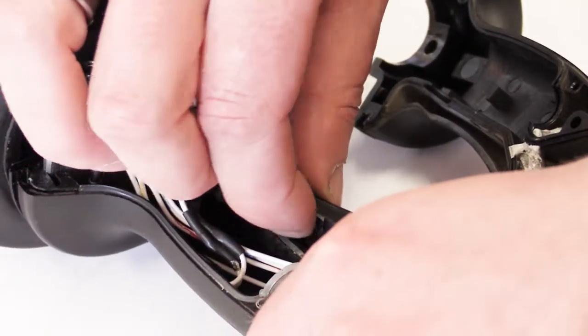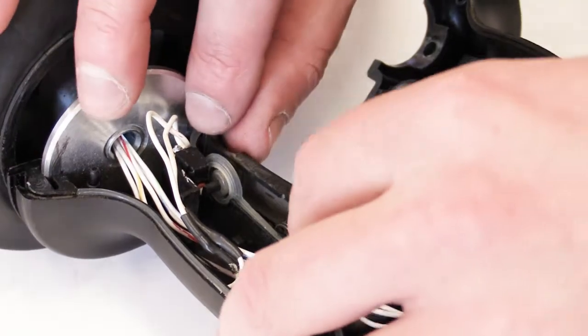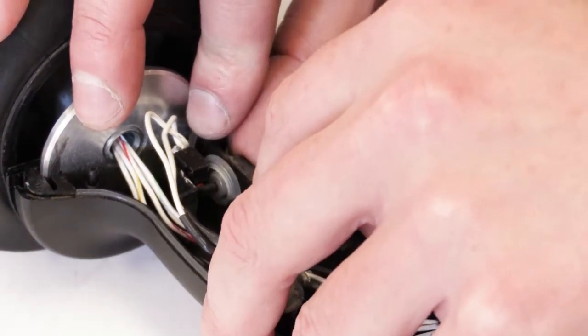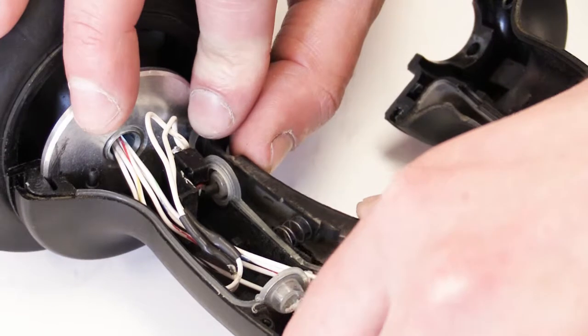When installing the dead man actuator lever, ensure that the spring is located in the boss at the top side of the lever.